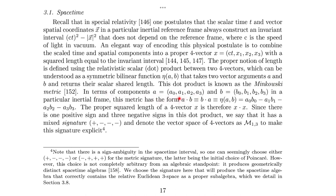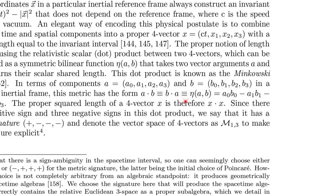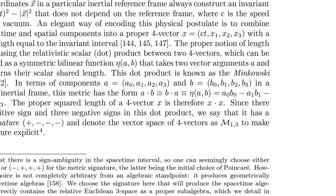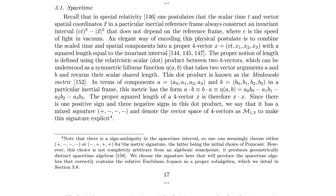The only way that's true is if you use the Minkowski metric to do the squaring. In terms of two four-vectors A and B in a particular inertial frame, A·B is commutative — A·B equals B·A. It is the Minkowski metric applied to A and B: A⁰B⁰ − A¹B¹ − A²B² − A³B³. That reaffirms the signature.